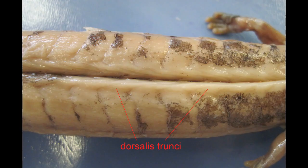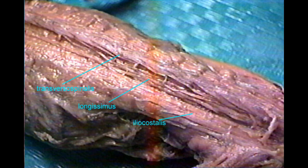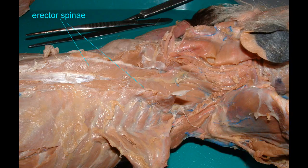So, the ancestral dorsalis truncti, a single muscle, is divided into three separate muscles in amniotes, which can collectively be called the erector spinae.